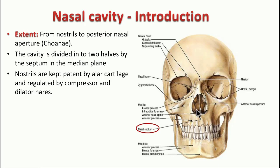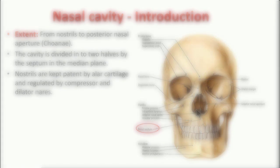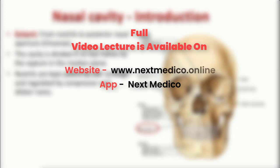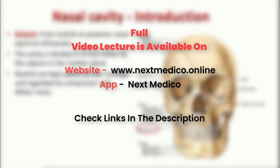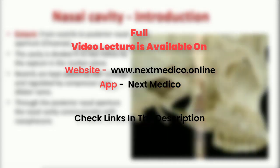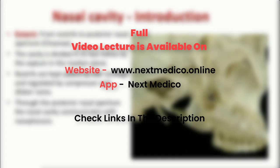The nostrils are kept open and patent by the cartilages and the muscles acting on them — the compressor and dilator muscles — though in humans these are mostly vestigial and not very functional. The posterior nasal aperture is called the choana, through which the nasal cavity communicates with the nasopharynx.